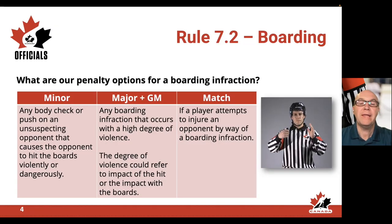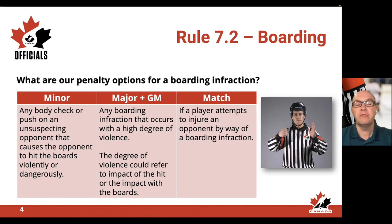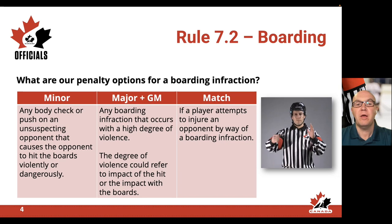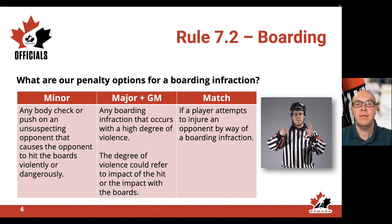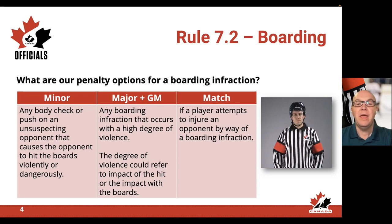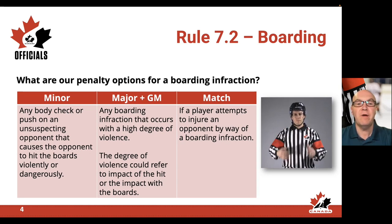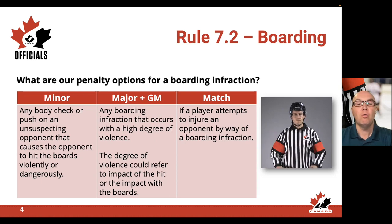What are the penalty options for a boarding infraction? First, there's a minor penalty — any body check or push on an unsuspecting opponent that causes them to hit the boards violently or dangerously. A major and game misconduct penalty is called when the boarding infraction occurs with a high degree of violence, which could refer to the impact of the hit or the impact with the boards.